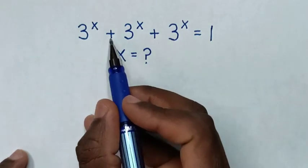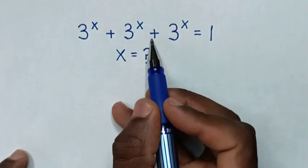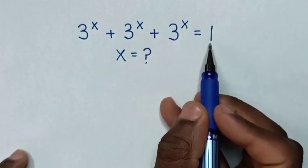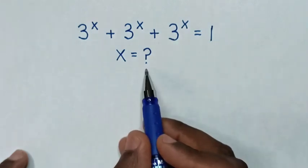Hello! How to solve 3^x + 3^x + 3^x = 1? To find the value of x from this equation.